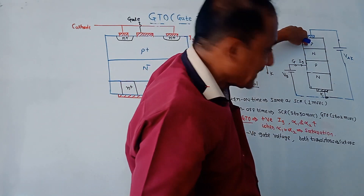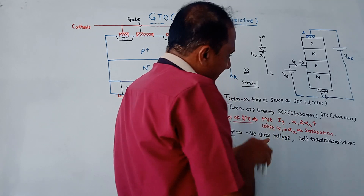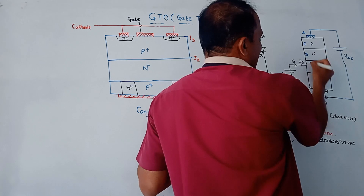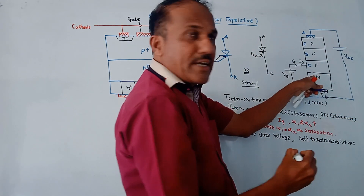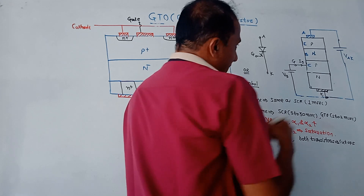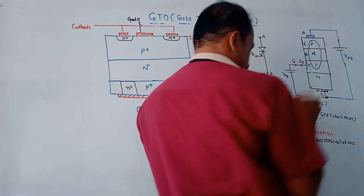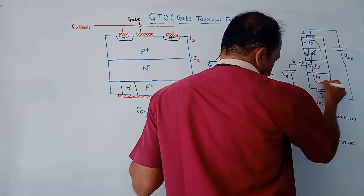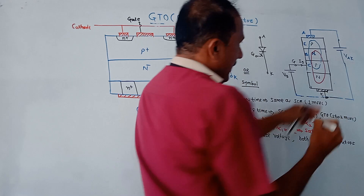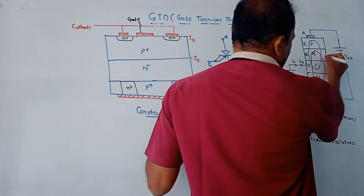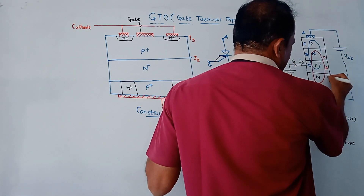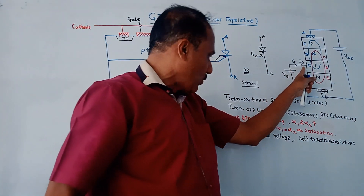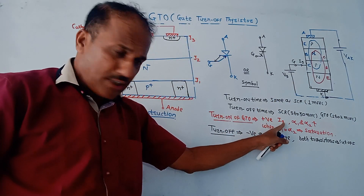For the upper part — a PNP transistor — the terminals are emitter, base, and collector. The lower three layers form an NPN transistor, whose terminals are collector, base, and emitter. To turn on the GTO, like the SCR, we need to apply positive gate voltage, which causes positive gate current Ig.